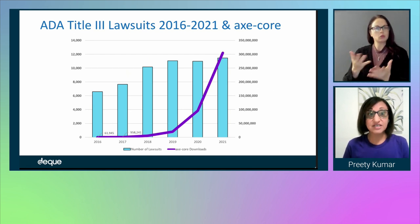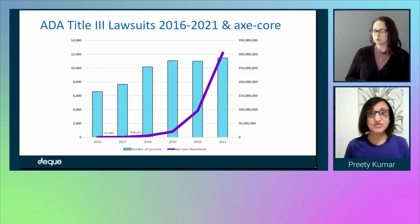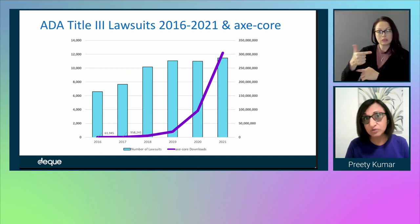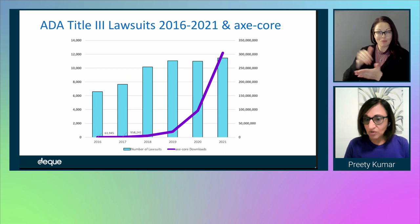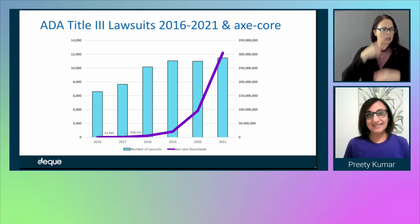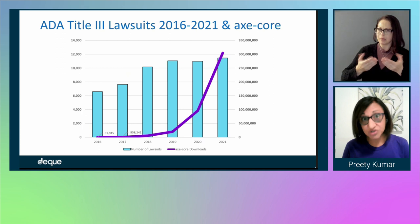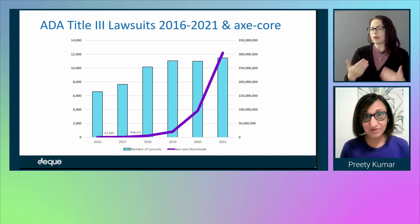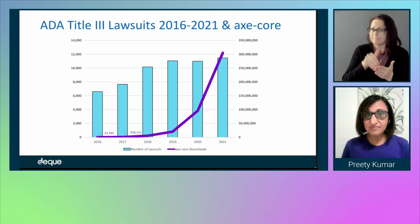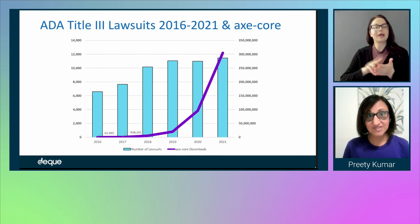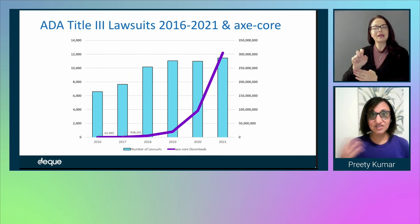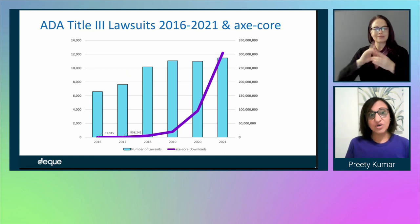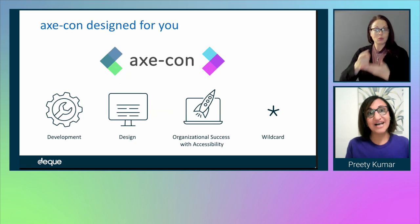In 2021, at the end of the year, we crossed 300 million downloads and thought maybe this is taking hold. Fast forward to March of 2022, and we have close to half a billion downloads. That really means that developers and dev teams across this world are embracing digital accessibility. We hope with AxeCore we're going to help you go further, faster.